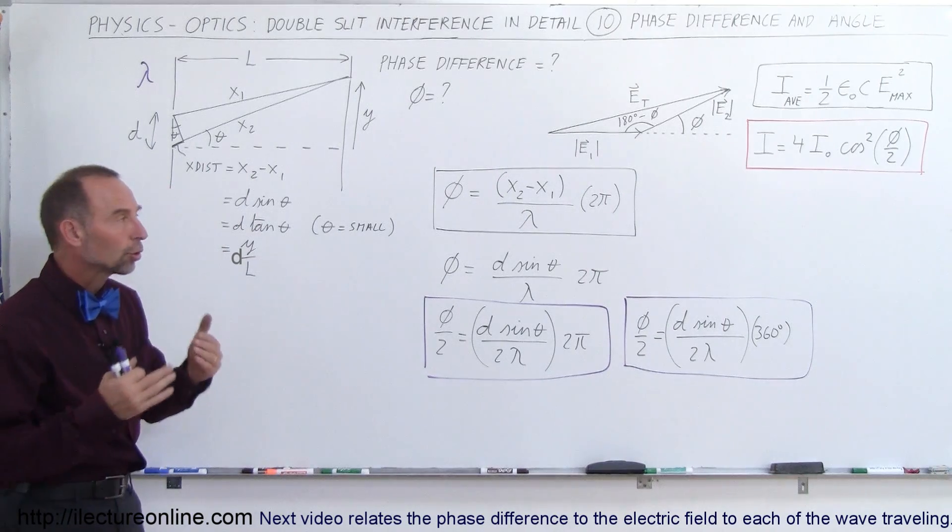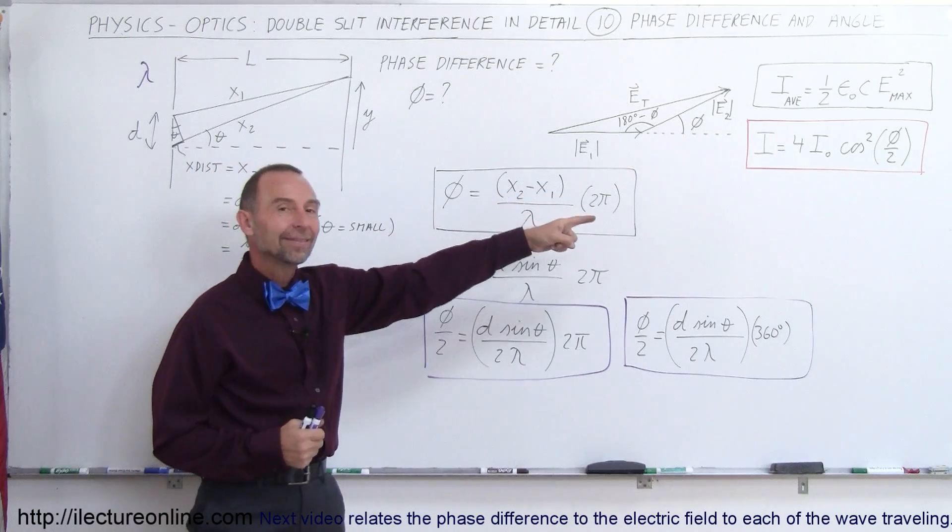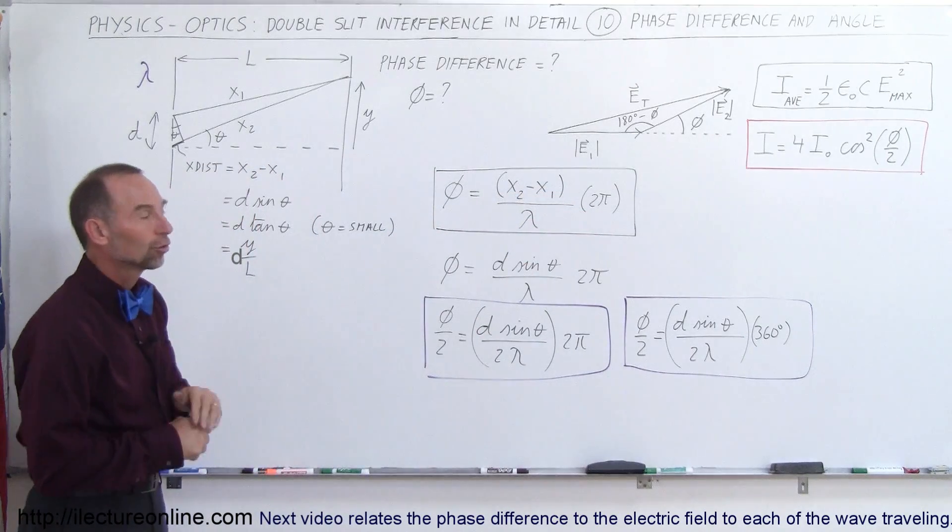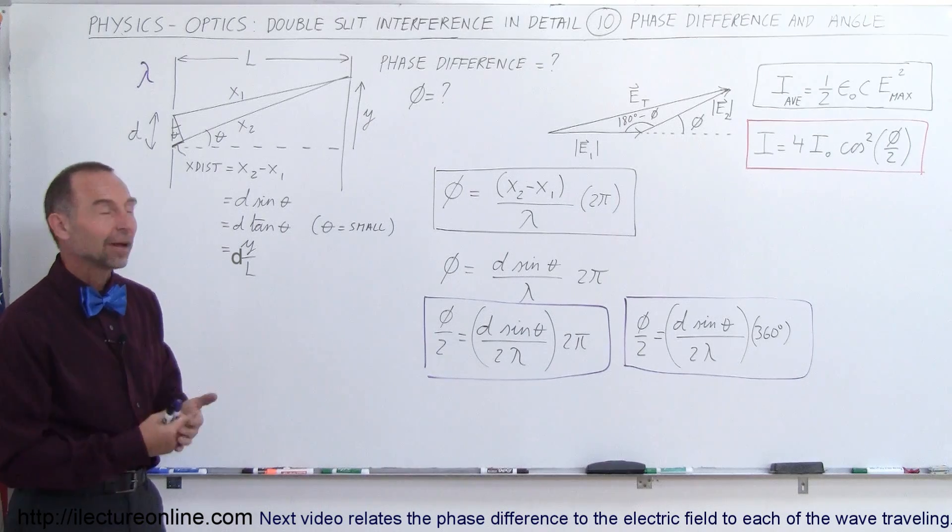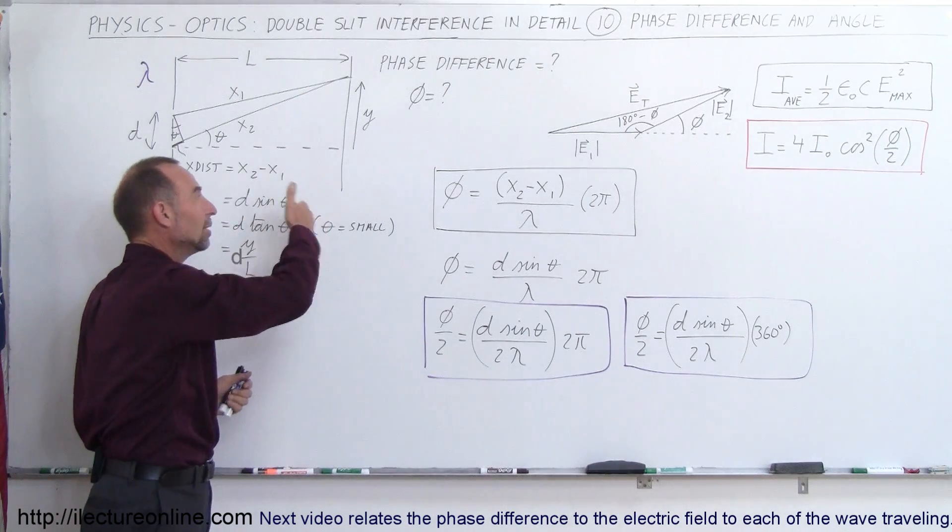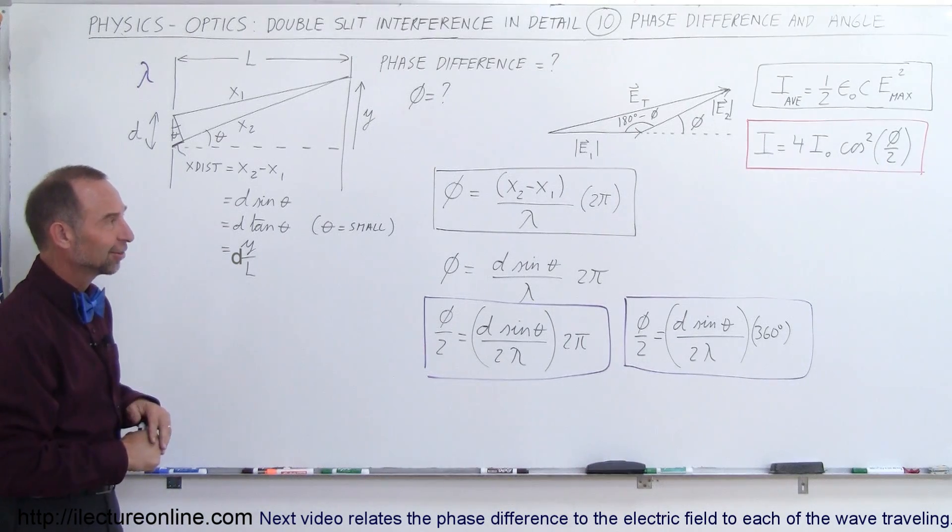Now in the next video, I will show you the relationship between this equation and the equation that determines the intensity, and then we'll go ahead and show you some examples to hopefully clarify this whole thing, and you'll be able to figure out the intensity anywhere along the screen with a double slit interference pattern. And then we're successful in getting a handle on this.